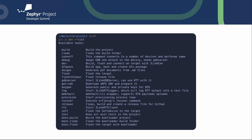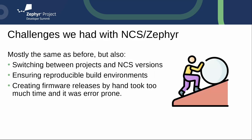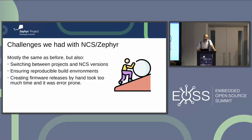On this project we were also using Memfault, so there's one command that creates an image and sends it to the Memfault server. This was quite useful for us. When we started working with NCS and Zephyr, we found we had kind of the same issues as before, plus some additional ones.